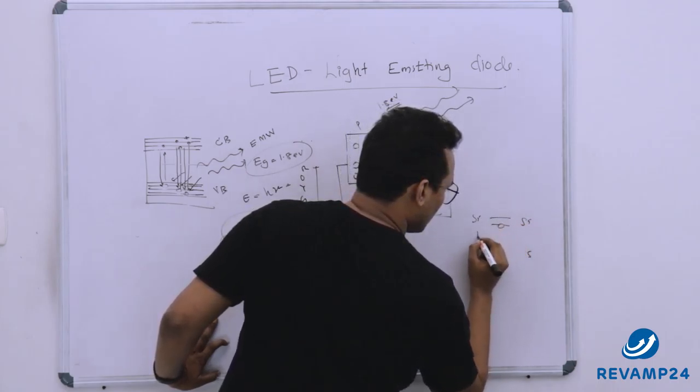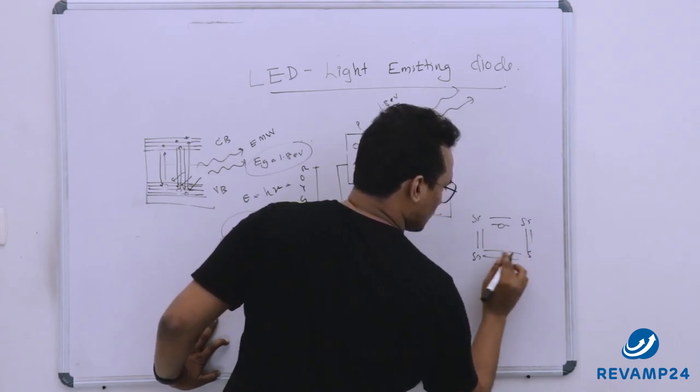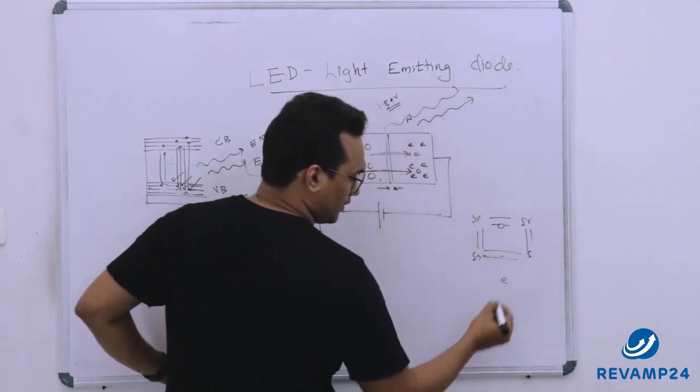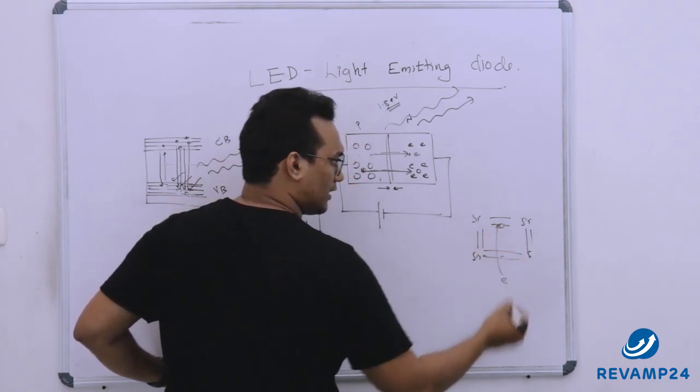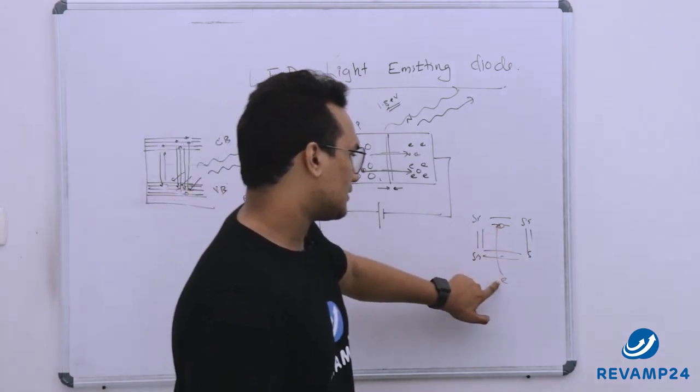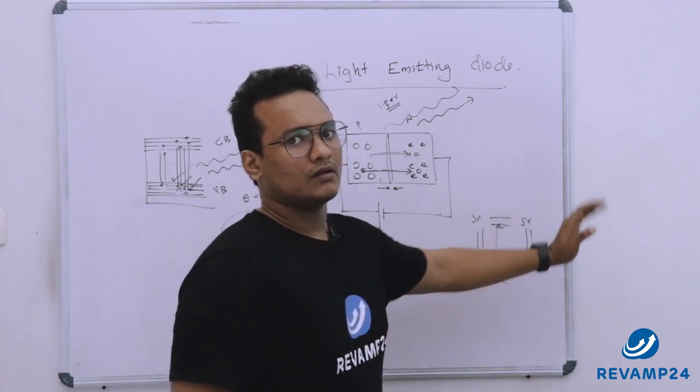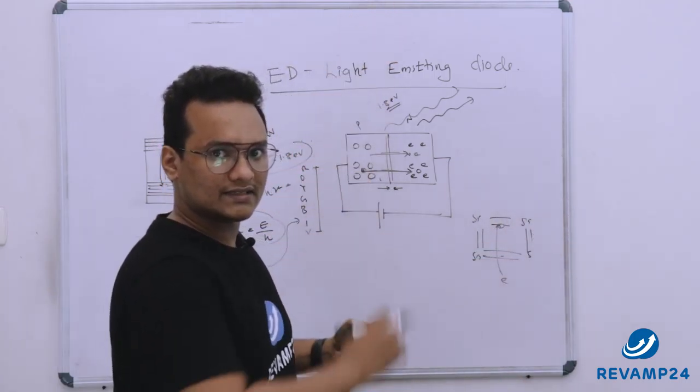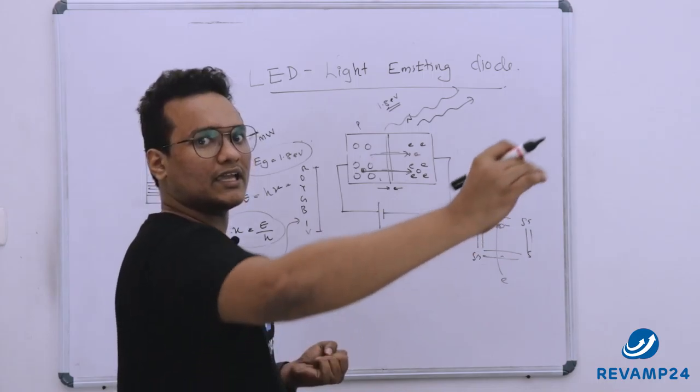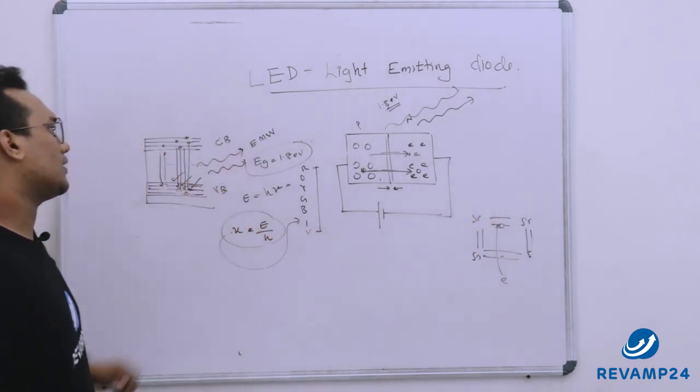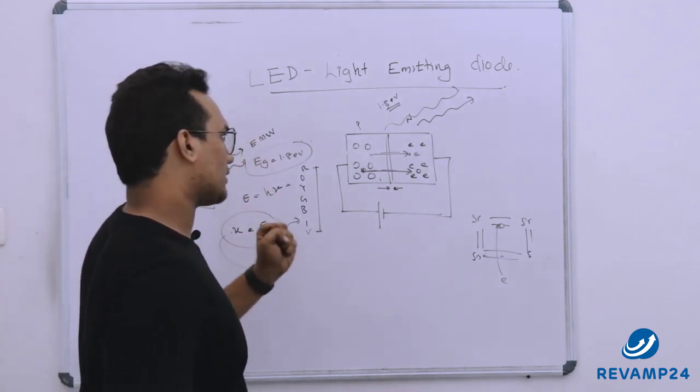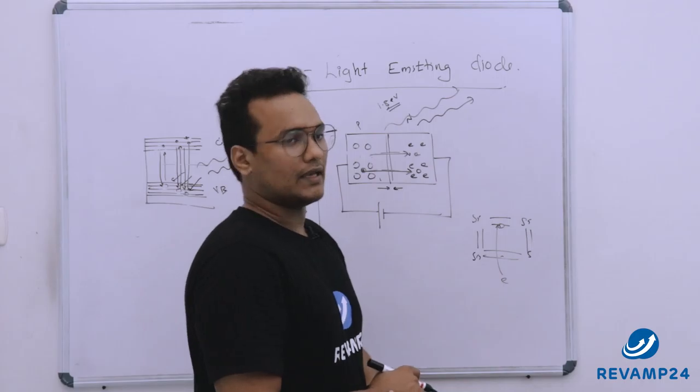Now this was the hole, this was the free electron for example. Okay these are electrons. Now this free electron comes and recombine with the hole. Now this electron would be a part of bonding having a lesser energy. From higher energy to lower energy how does this takes place? By emitting energy in the form of electromagnetic waves and that electromagnetic waves is in the visible spectra so we can able to see light.